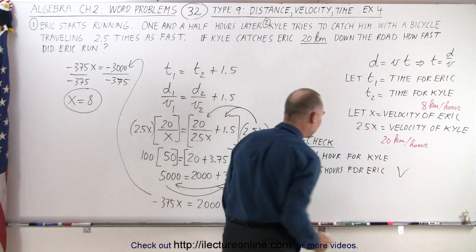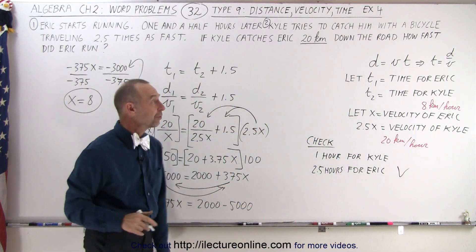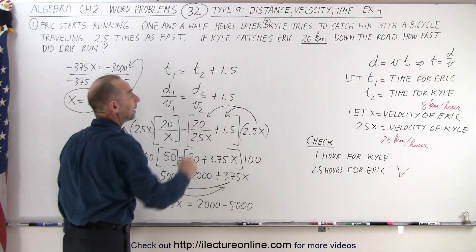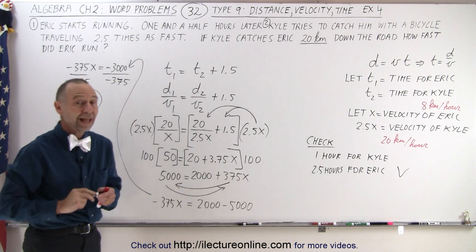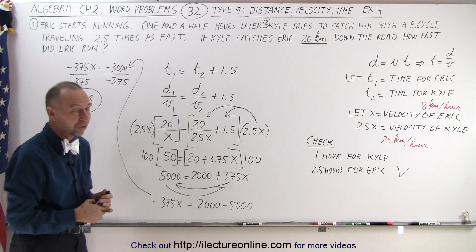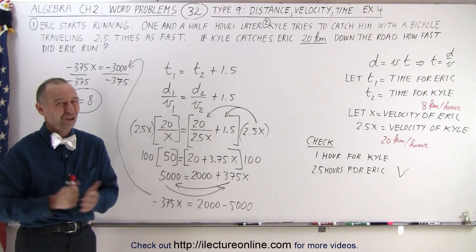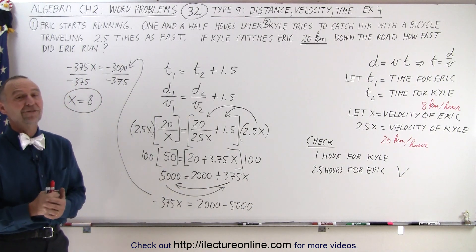And notice that checks out, because there's a difference of one and a half hours, which is what we knew in the beginning—that it would take Kyle one and a half hours less to get to that distance compared to Eric. So it checks out. And that is how it's done.